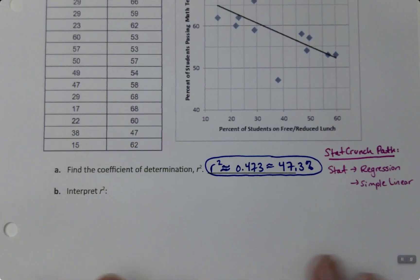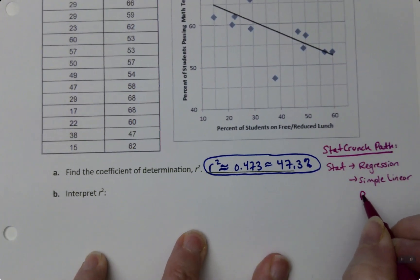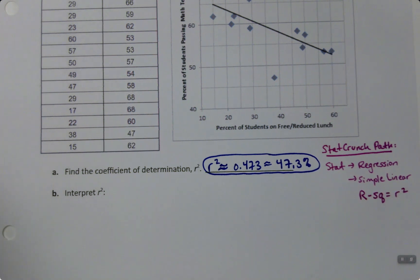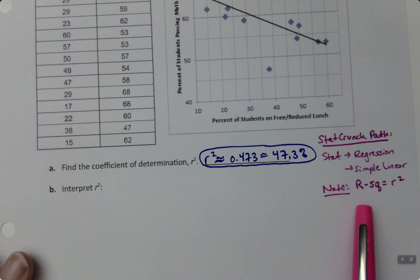It's the same way we do everything in Chapter 4: you go to Stat, then Regression, then Simple Linear. Easy as that. You're going to look for R-sq, which is R-squared.